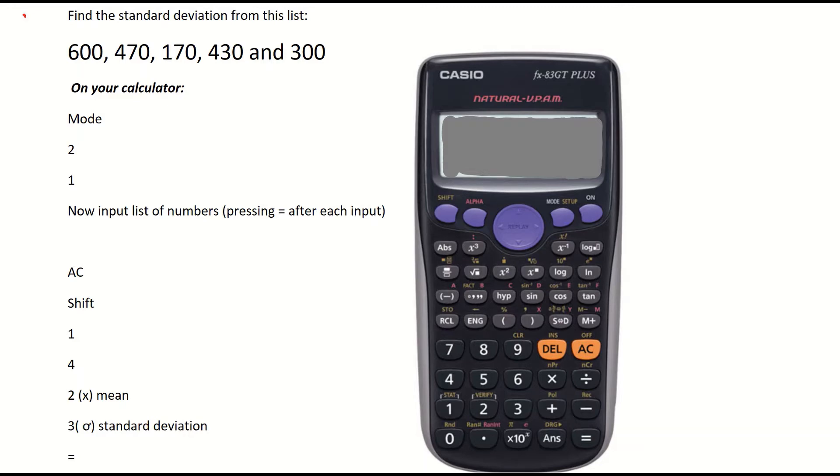So first thing you do now after clearing your calculator is press the mode button on your calculator. I've circled it there in red if you can't find it. You then press the 2 key on your calculator which clicks statistics. You then click the 1 key on your calculator which says 1 dash there, so 1 variable in other words.